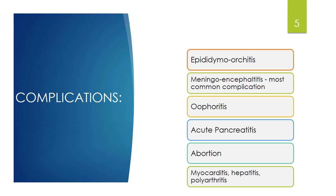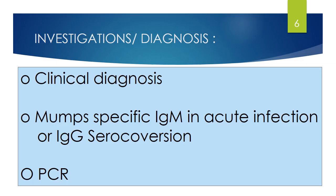Additional complications of mumps include myocarditis, hepatitis, polyarthritis, labyrinthitis, and transient hearing loss. Mumps is primarily a clinical diagnosis, but we can also perform mumps-specific IgM for acute infection and IgG seroconversion for past or chronic infection.